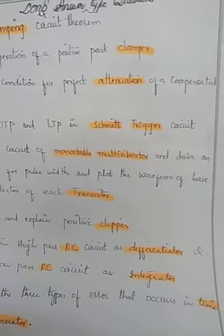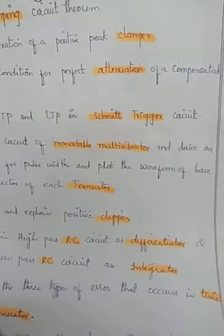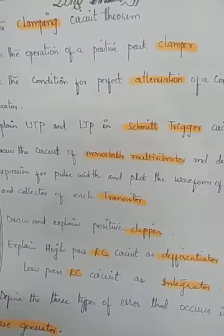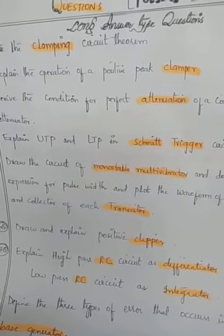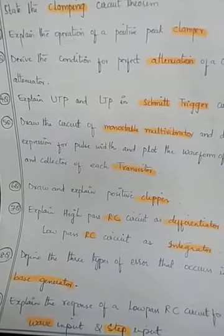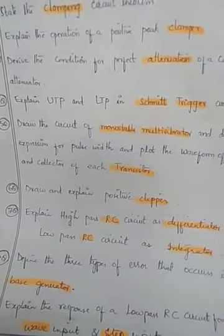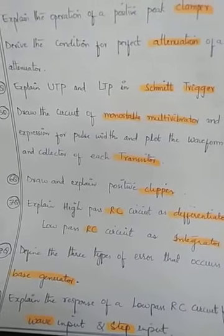Next: draw the circuit of a monostable multivibrator and derive an expression for pulse width, and plot the waveform of the base and collector of each transistor. First draw the monostable multivibrator circuit, then explain the pulse width derivation and how to plot the waveforms. We did this derivation in your classwork on multivibrators.